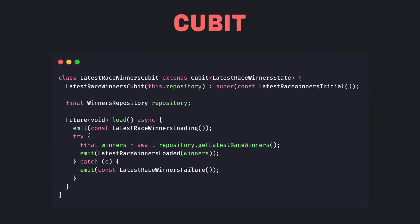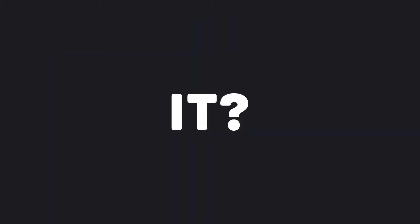Now let's start with a simple example. Here we are doing a simple data fetching using Cubit. Then we change the state and display the data with the help of Cubit. Now if we want to do exactly the same thing with RiverPod, how should we do it?